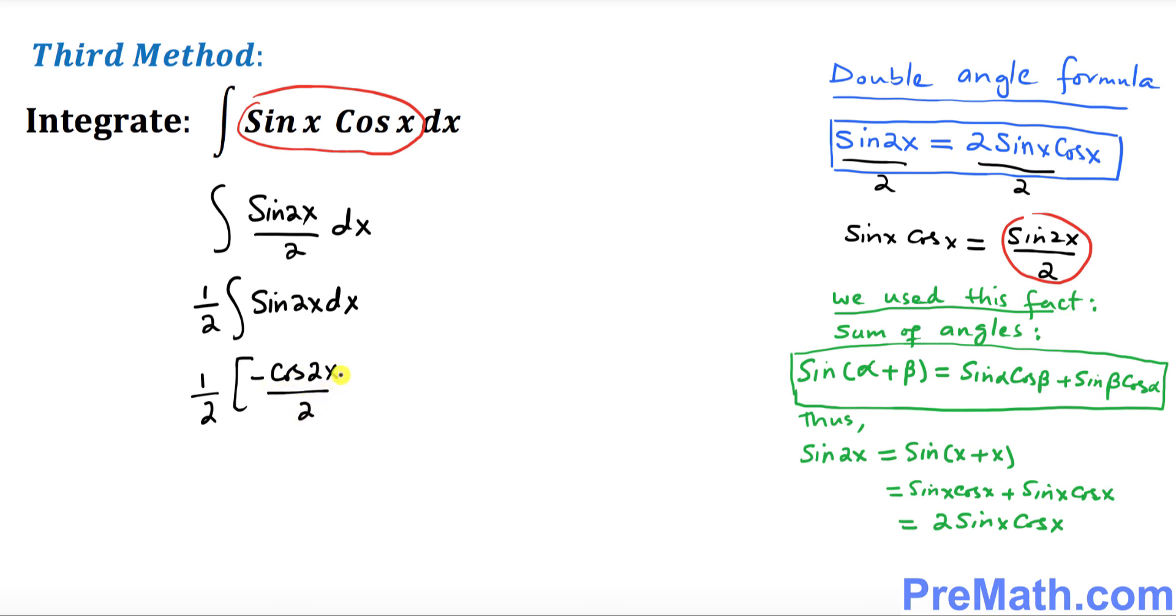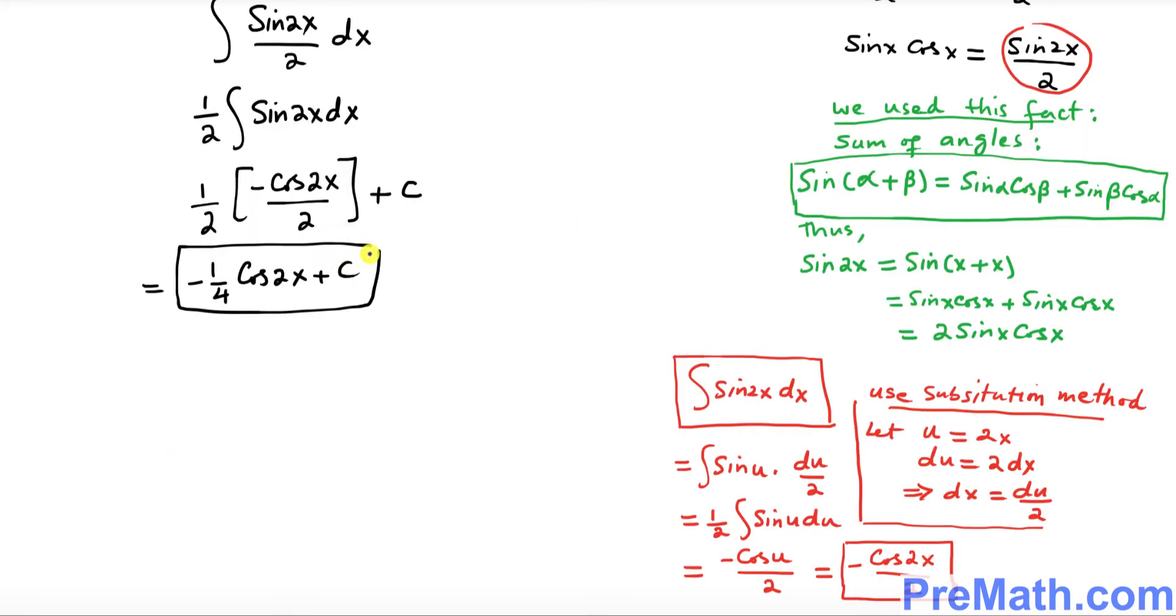So your complete answer turns out to be simply negative 1 over 4 cosine of 2x plus c. And that is our answer.